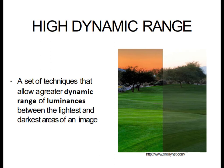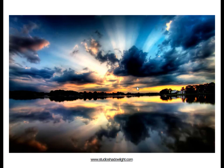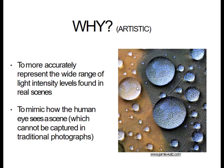High dynamic range photography is a set of techniques that allow a greater dynamic range of luminances between the lightest and darkest areas of an image. An example of that: on the right is the traditional photograph just taken with your camera, and the image on the left is high dynamic range photography. Here's an example of a high dynamic range image.